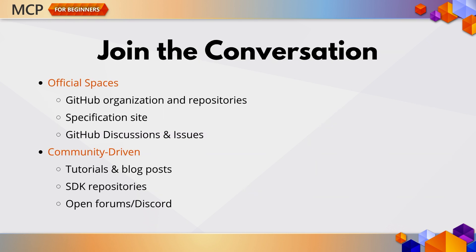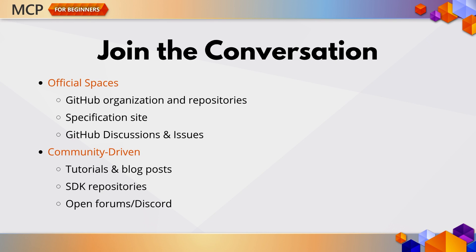The official community lives in a few key places. First, there's the MCP GitHub organization, and then there's also the specification site. And finally, there are GitHub discussions, issues, and pull requests. But there are also community-driven channels like tutorials, blog posts, language-specific SDKs, and open forums. If you've ever wanted to share your insights or find collaborators, those are great starting points.